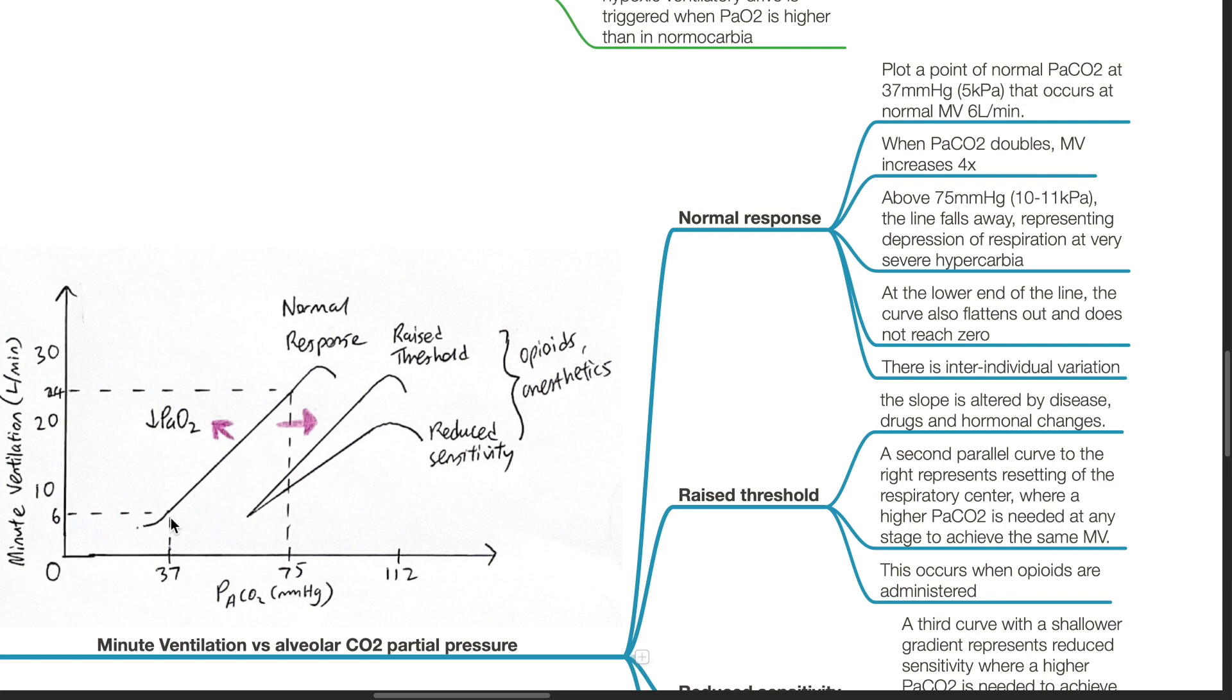As PaCO2 doubles, minute ventilation increases fourfold. Above 75 mmHg, the line falls away, representing depression of respiration at very severe hypercarbia.